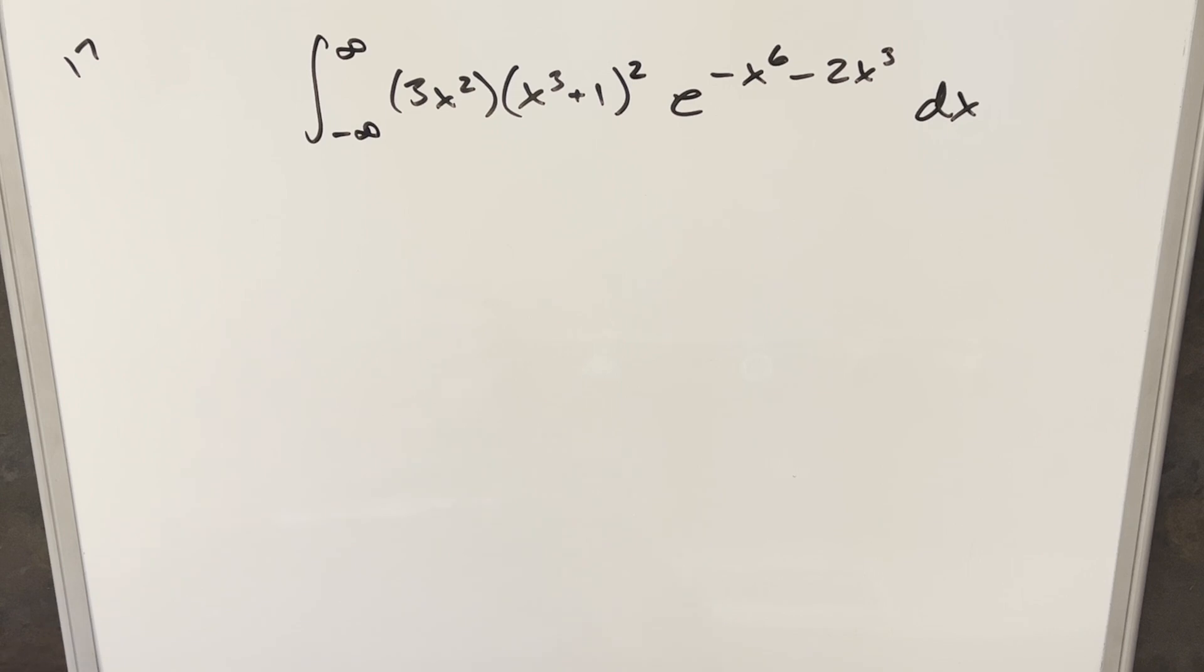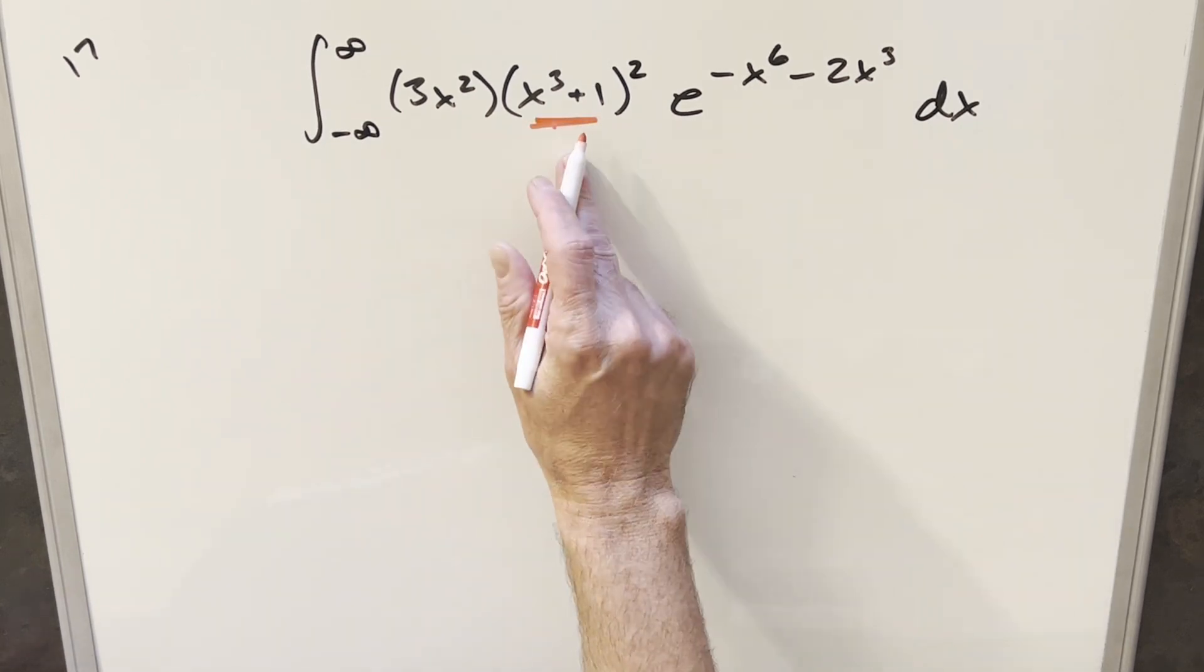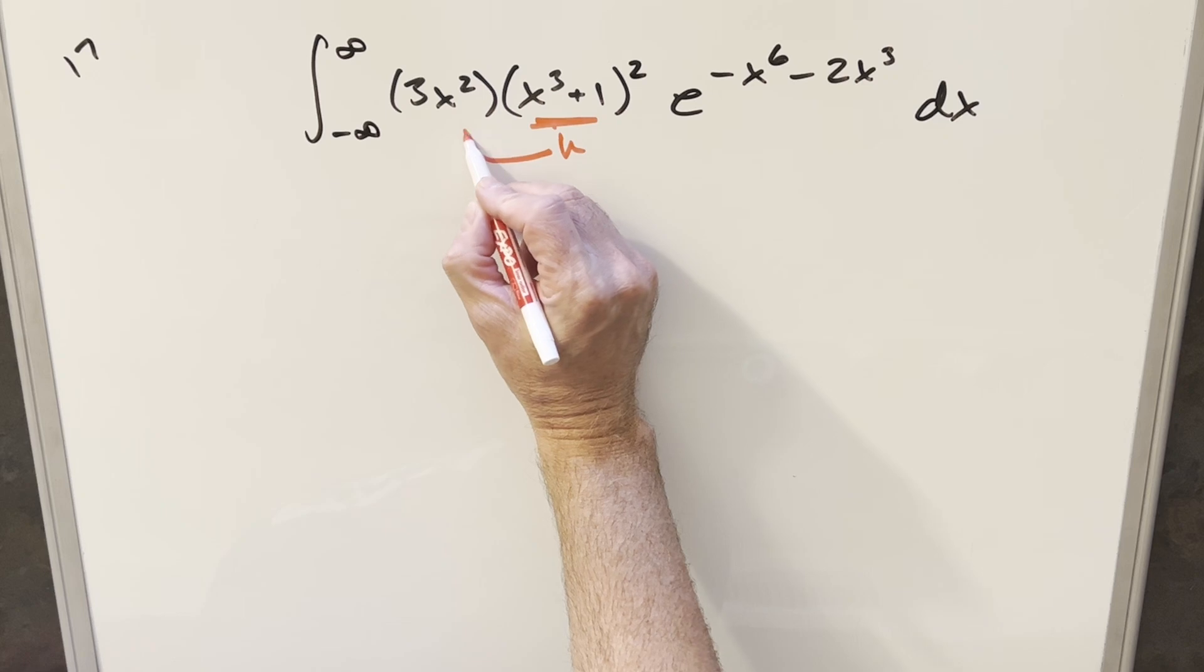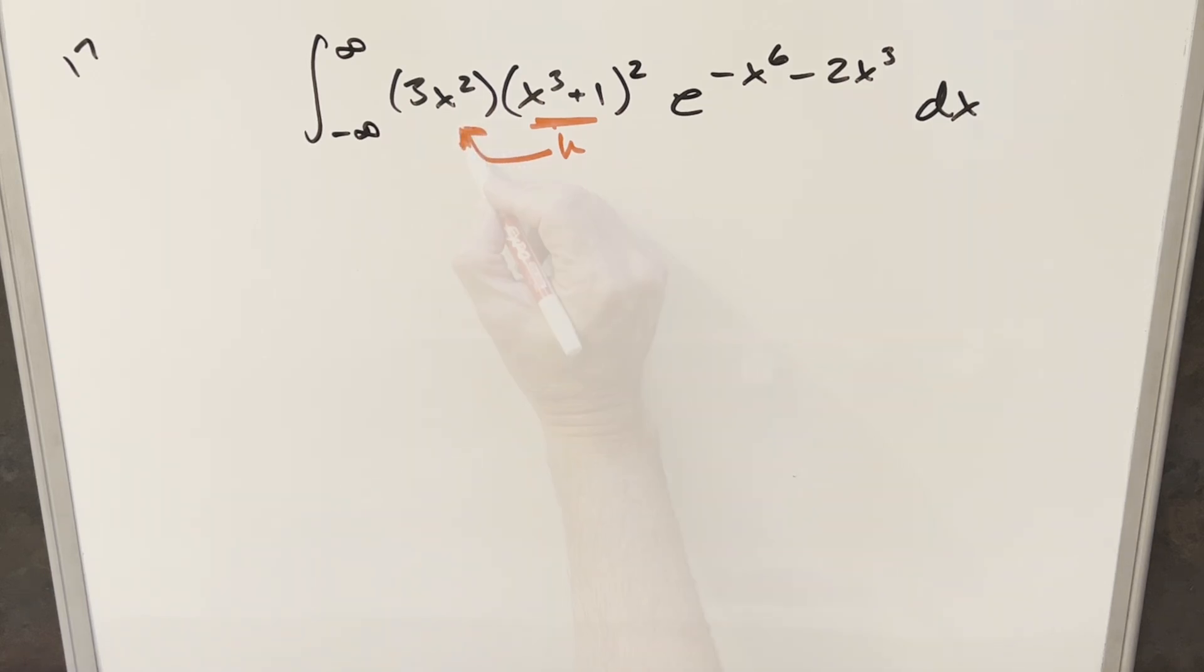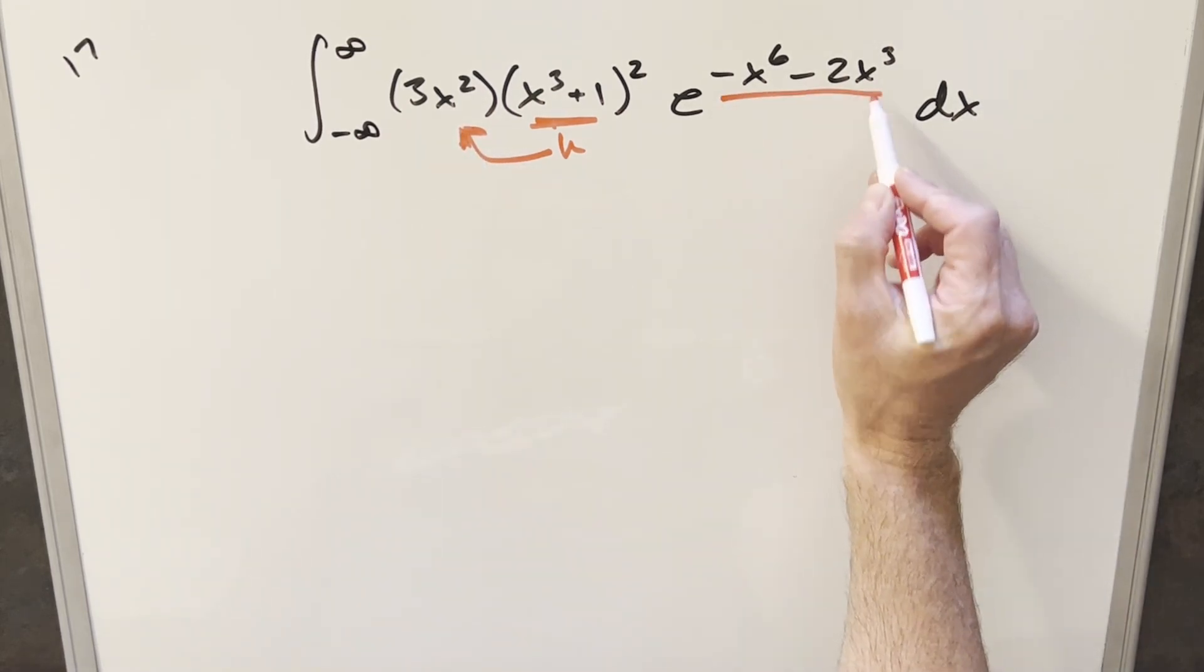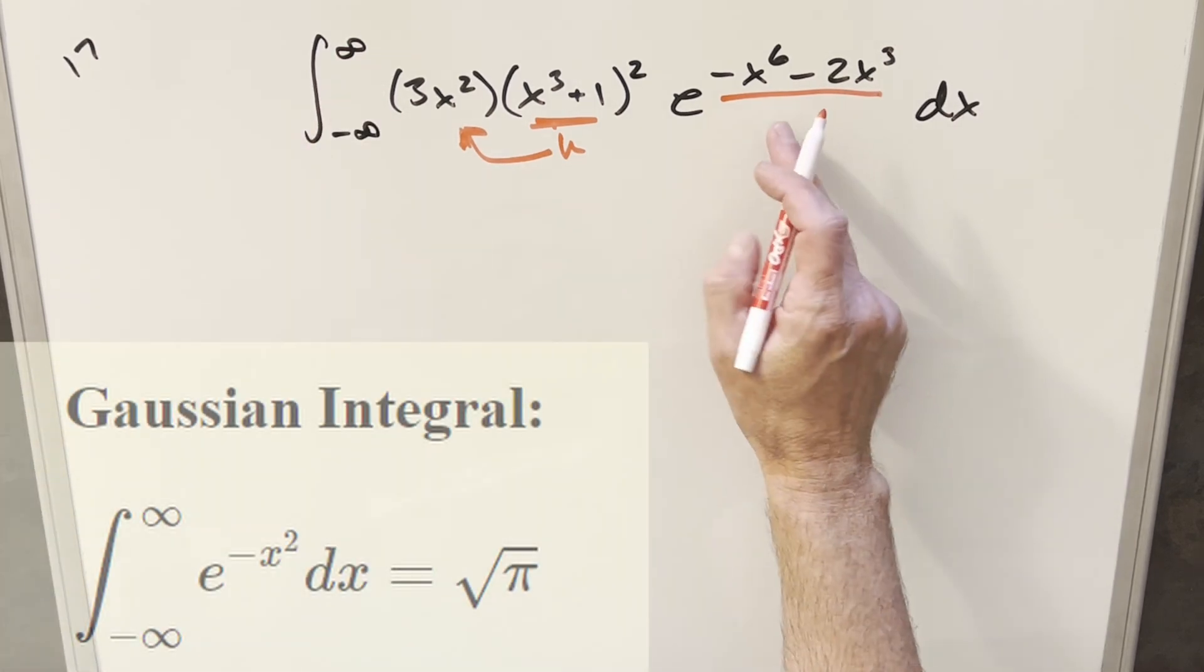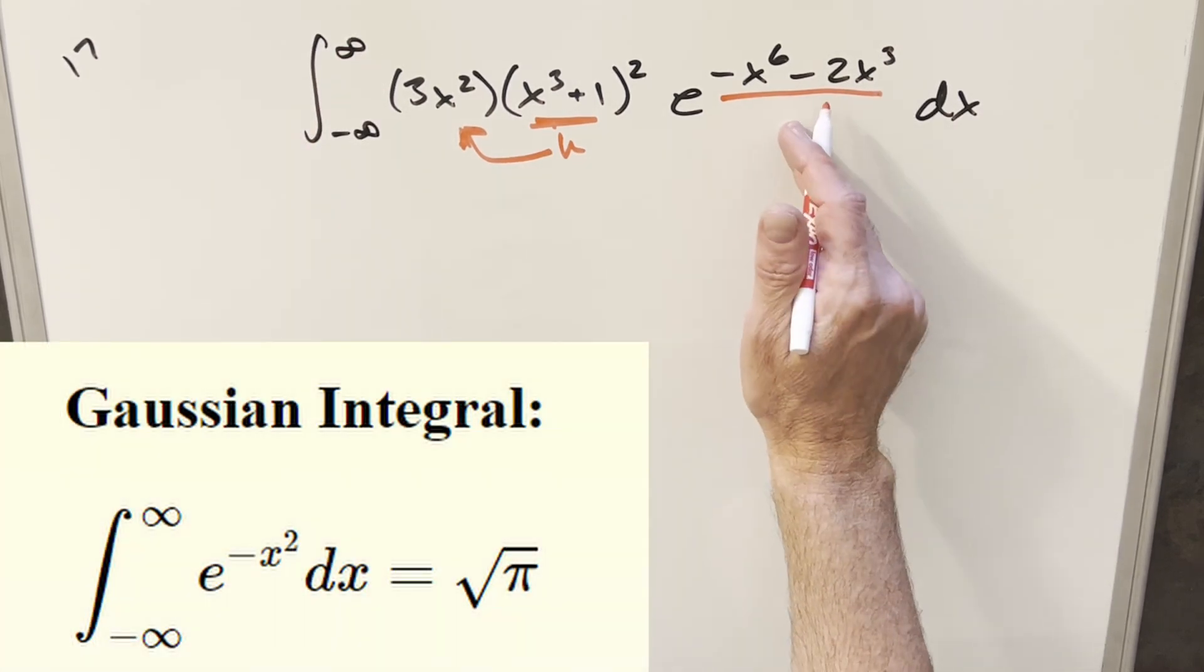Okay, a couple things I'm noticing here. First, this part right here is perfectly set up for a u substitution. If I did this as u, then we have our derivative right here. But then I'm wondering what's going to happen on this exponent right here. It's making me think of the Gaussian integral. We're going from minus infinity to infinity. If we maybe rearrange this, we could have this.